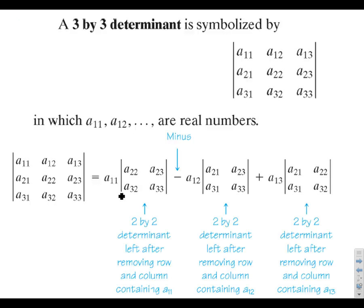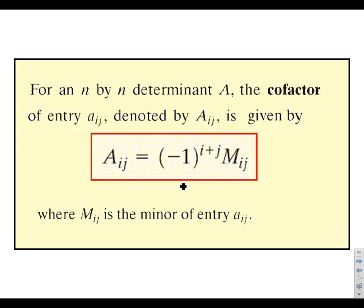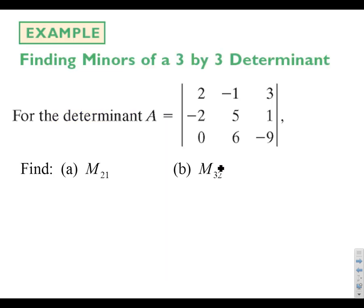How do we figure out if each term is minus or plus? It's going to be negative one to the power of i plus j, meaning if those two indices sum to an odd number, it's going to be negative. So if two plus one is odd, you multiply your answer by negative one. Three plus two is odd, you multiply by negative one.